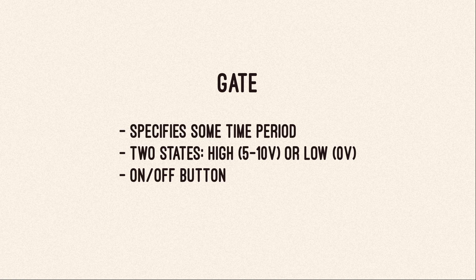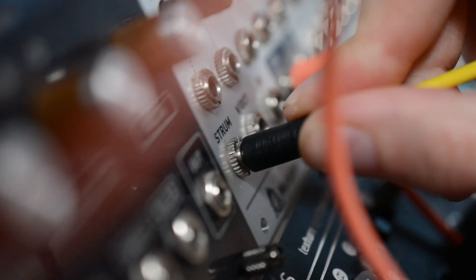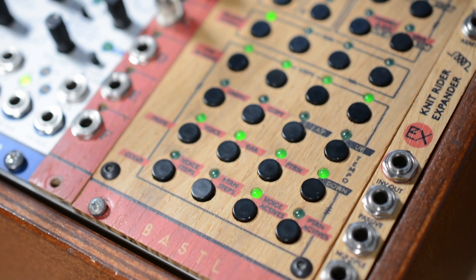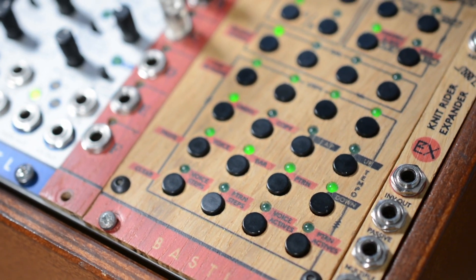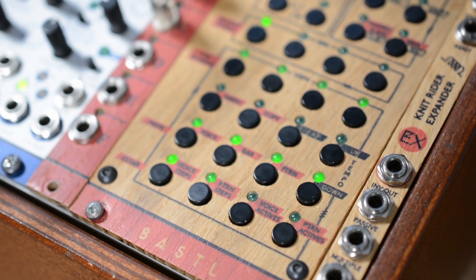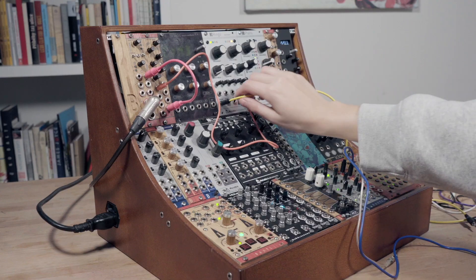The gate specifies some time period. It has just two states: high or low. Think of it as a key or controller that you hold or push down to make something happen. Once you release it the action stops, as you can see on the sequencer. The gate is just on when the lights are on.